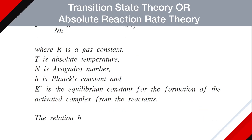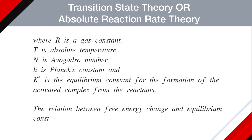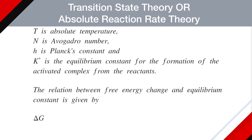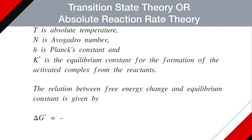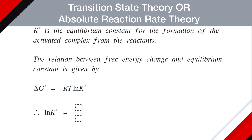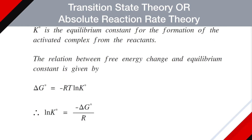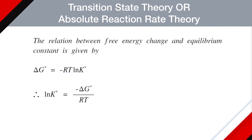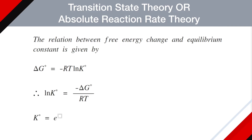The relation between free energy change and equilibrium constant is given by: delta G* = −RT ln K*. Therefore, ln K* = −delta G* / RT. On taking the antilog, K* = e^(−delta G* / RT). This is Equation 2.